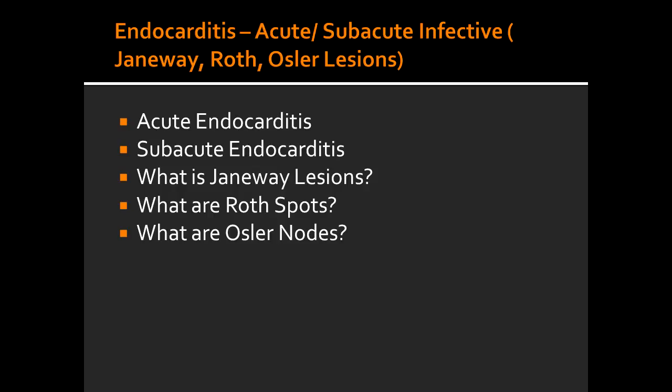What are some of the causes of acute infective endocarditis? Some of the causes of acute infective endocarditis are Staph aureus and Streptococcus.